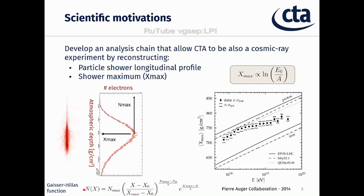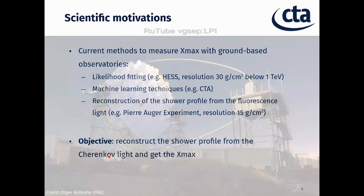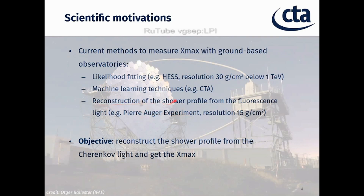The typical function used for the reconstruction of this observable is the Gaisser-Hillas function. There are some current methods to measure Xmax with ground-based observatories, like the likelihood fitting used by the HESS telescope — they have a resolution of 30 g/cm² for energies below 1 TeV. There are also machine learning techniques used for CTA, for example to reconstruct energy and other parameters. Other techniques are based on fluorescence light, as in the Pierre Auger experiment, to reconstruct the full shower profile, with the best resolution on the order of 15 g/cm² for higher energies.